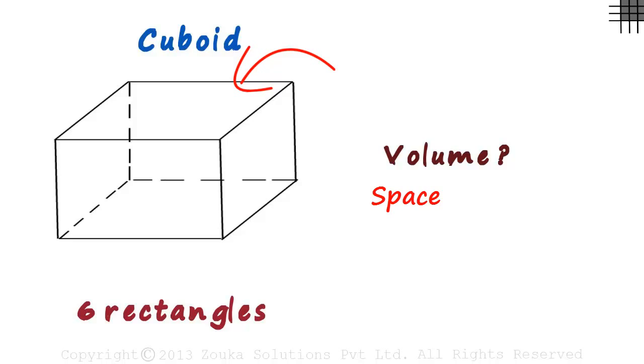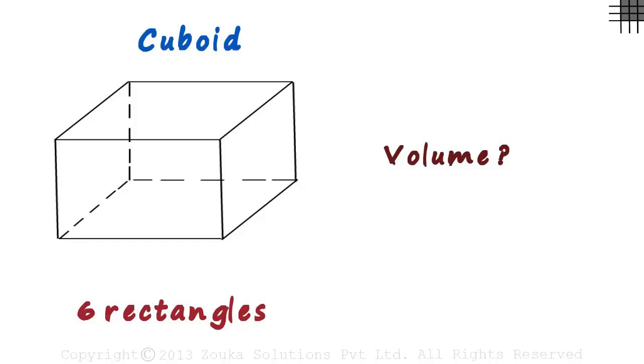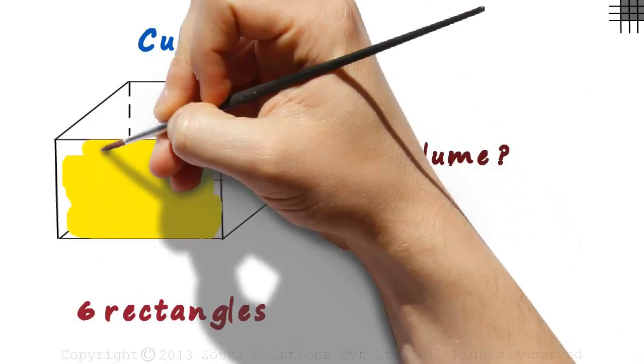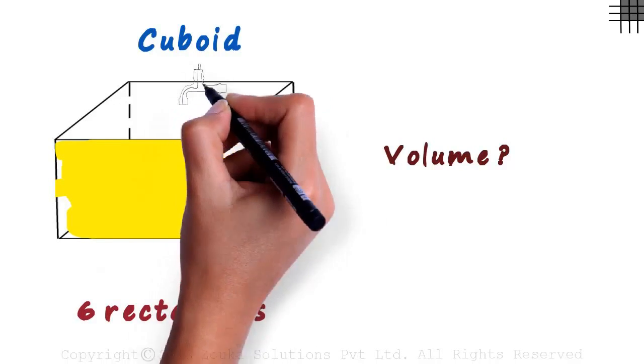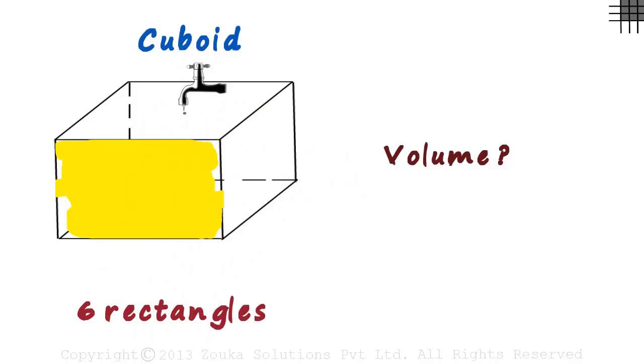When do we need to know its surface area? And when would we need its volume? Look at it like this. If I ask you to paint this box, you would need its surface area to find out how much paint you need. And if I ask you how much water this box can store, you would need to know its volume.